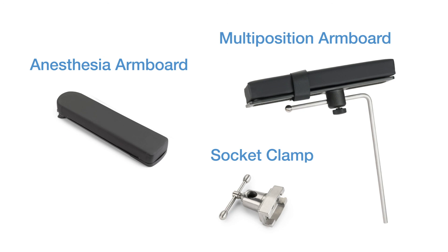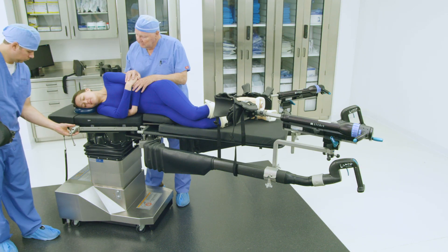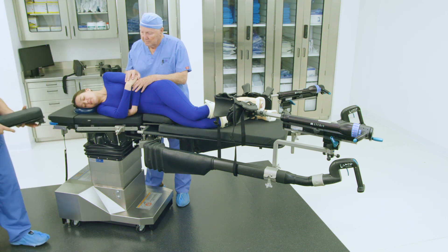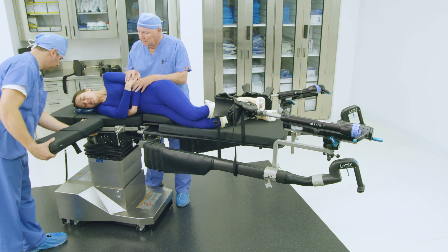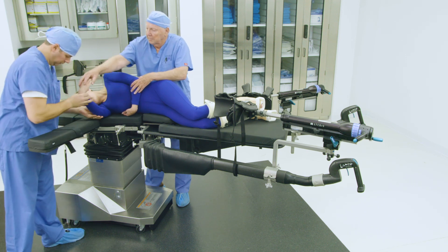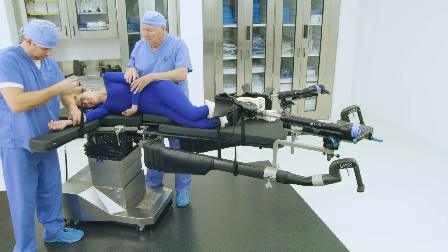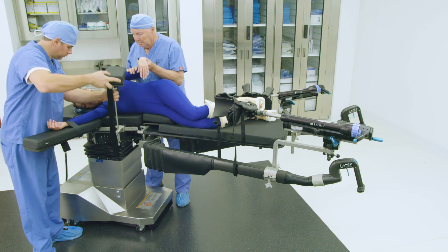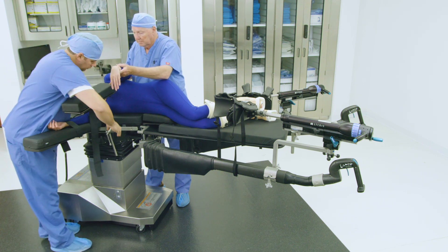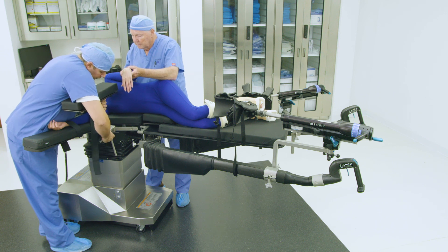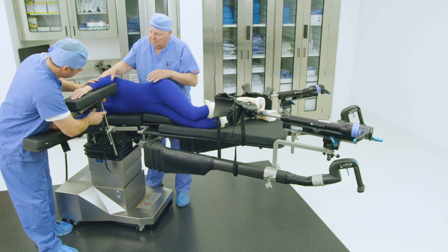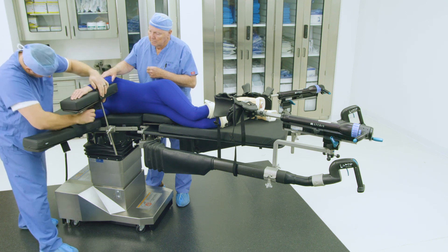Before attaching the anesthesia armboard, first apply a socket clamp to the side rail on the non-operative side of the table. Next, apply the standard anesthesia armboard to the side rail of the table on the non-operative side. Adjust as needed to accommodate proper arm position and apply the safety strap to secure the arm. Next, mount the multi-position armboard into the socket clamp. Adjust the height and position of the armboard above the patient's other arm, focusing on proper alignment and height positioning, and tighten the socket clamp to secure. Place the patient's operative side arm into the multi-position armboard and apply the safety strap to secure the arm.